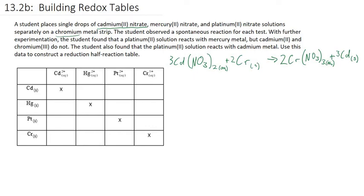That means the cadmium ion reacted spontaneously with chromium solid, so we can fill an S in this box in our table. Similarly, mercury-2 nitrate — the mercury ion — reacts spontaneously with the chromium metal, so this is also spontaneous. And the third one, platinum-2 nitrate, also reacts spontaneously with chromium. The next piece of data: a platinum-2 solution reacts with mercury metal — so that's the platinum-2 ion, spontaneous with mercury metal. Cadmium-2 and chromium-3 do not react spontaneously with mercury metal, so these two are non-spontaneous. Lastly, the student also found that the platinum-2 solution reacts with cadmium metal.